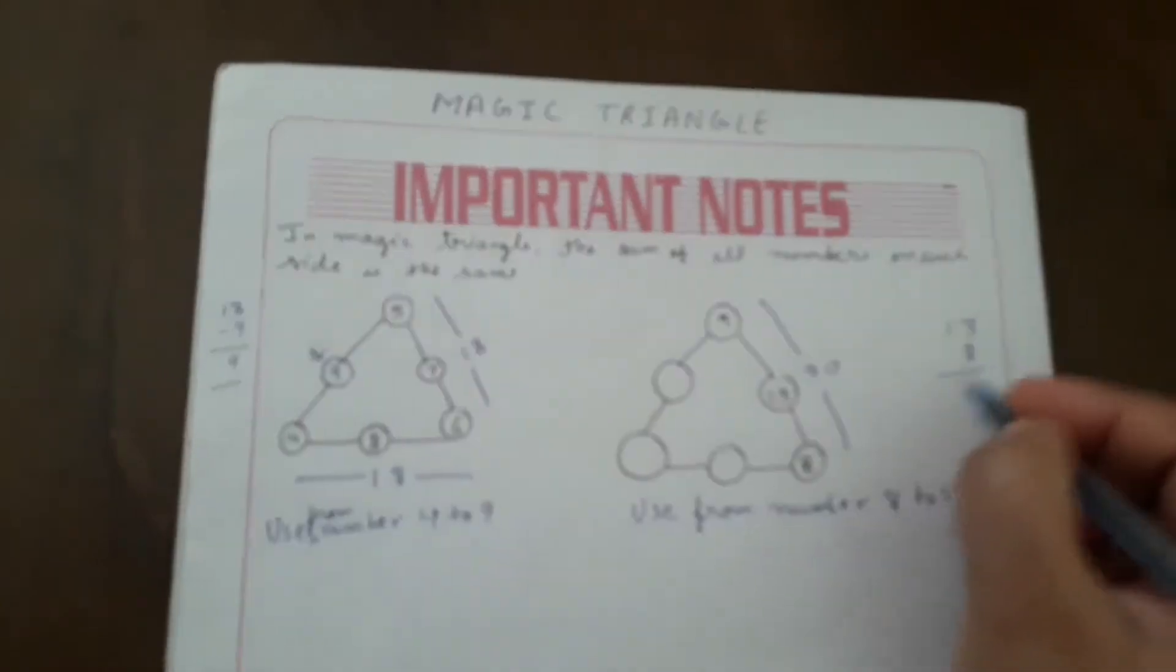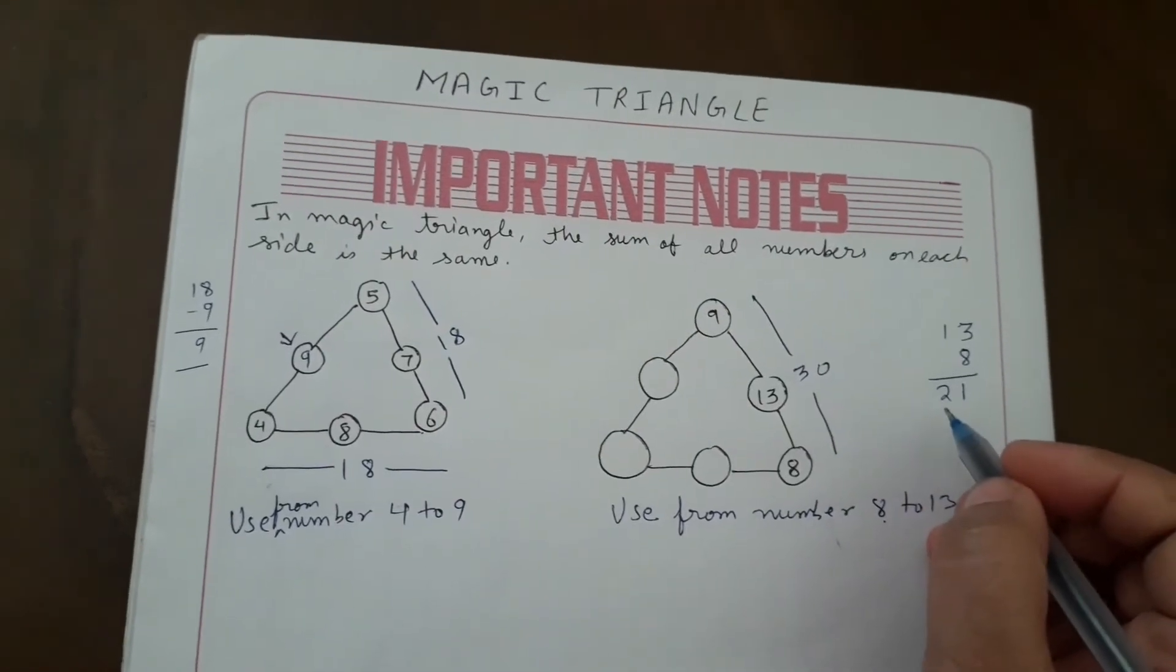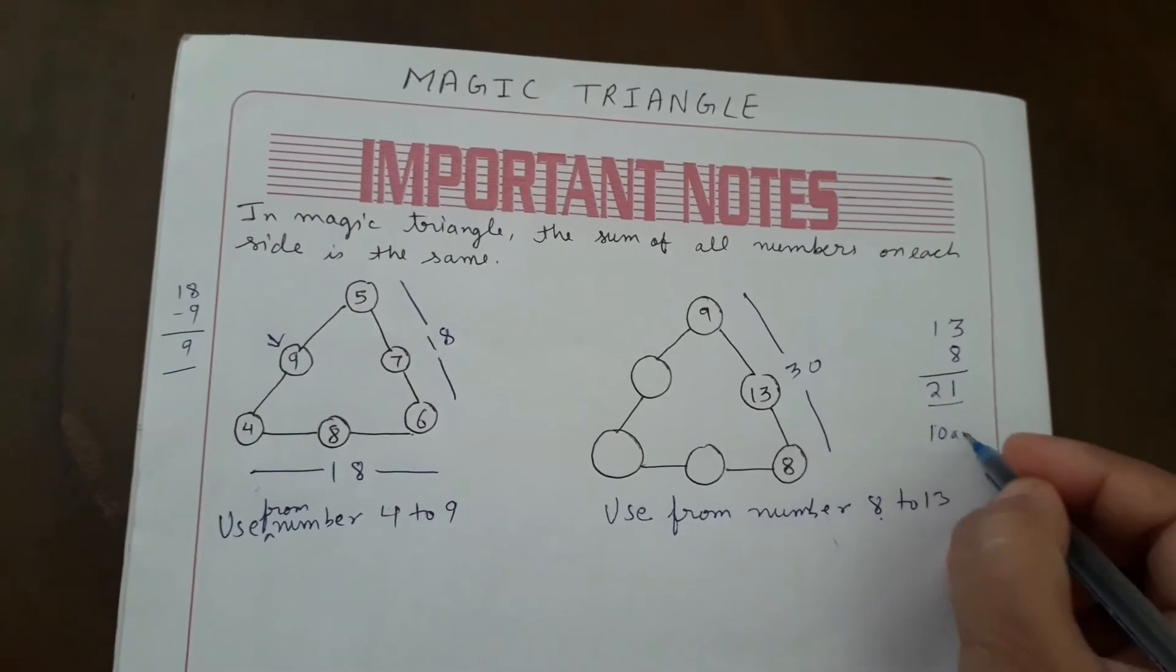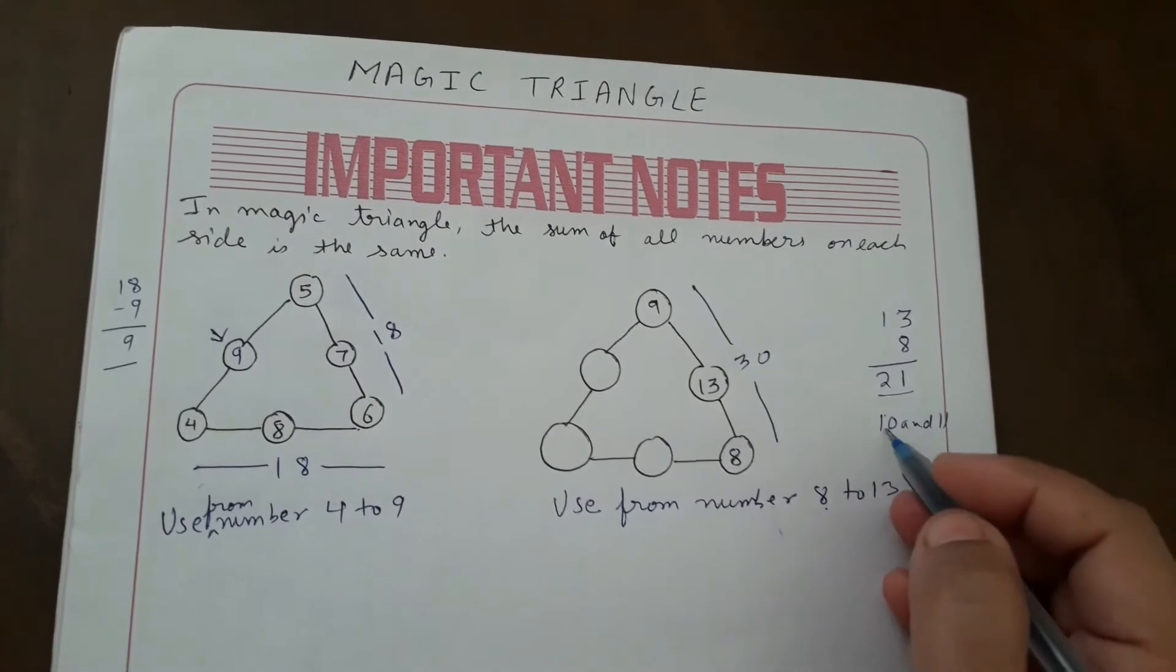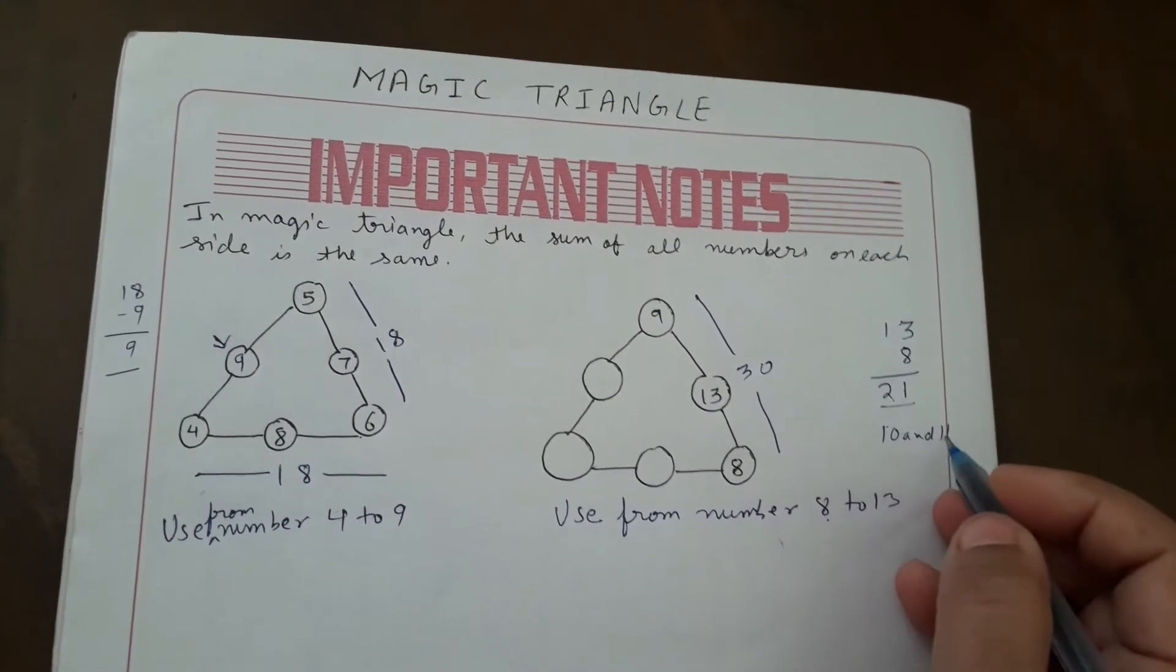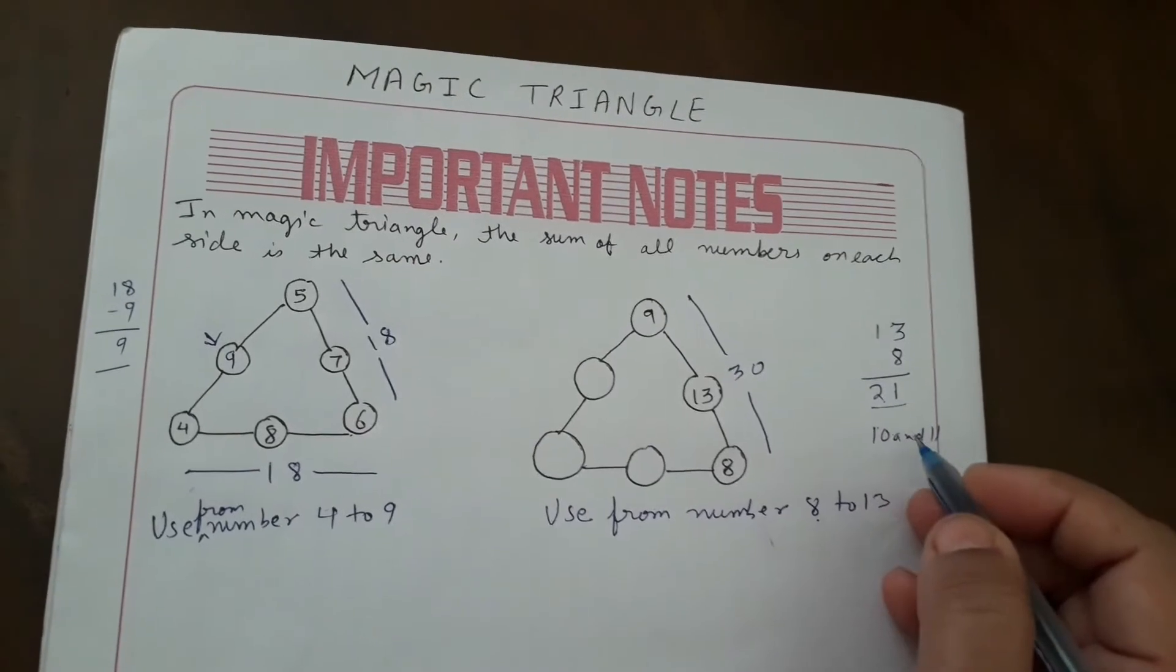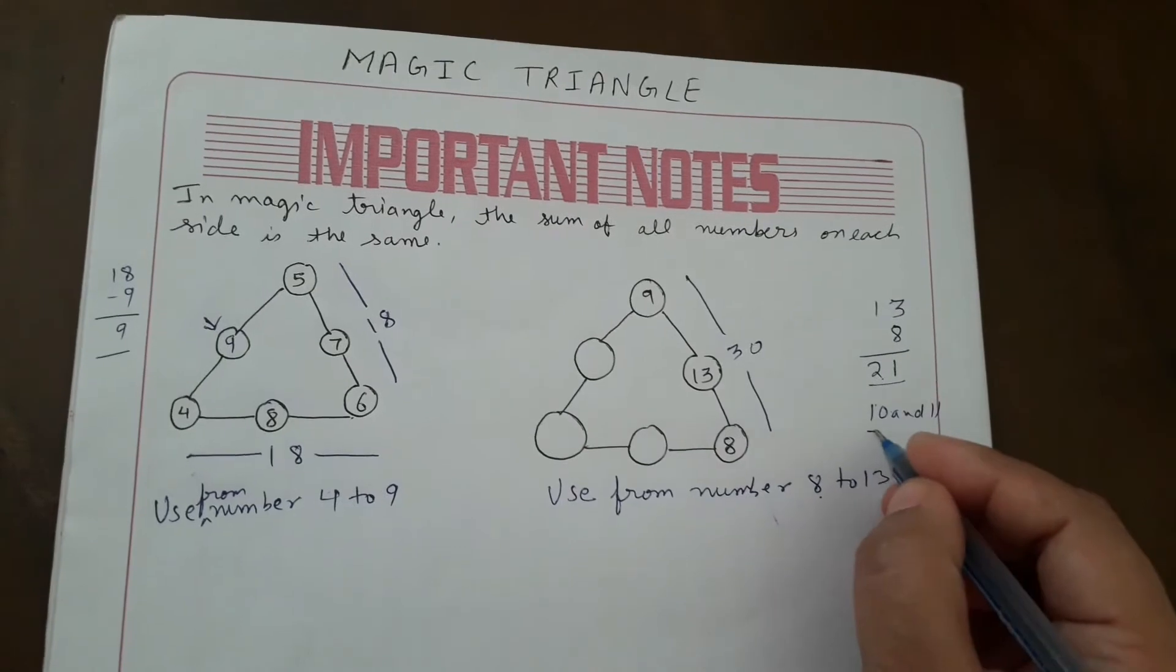8 plus 13 will come 21, and half of 21 is 10.5, means 10 and 11. We have to search for two numbers that add to 21 and half of that is 10.5, means 10 or 11. So our two numbers are 10 and 11.